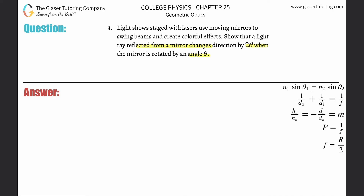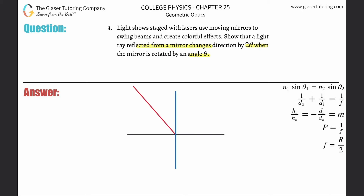So pretend you have a mirror, and let's draw the normal to the mirror — a 90-degree angle relative to the mirror, that's perpendicular. Let's also assume that we have an incident ray coming in. This incident light ray is not moving. In other words, when we rotate the mirror, we're going to assume that this light source does not move. The angle of incidence is always relative to the normal.